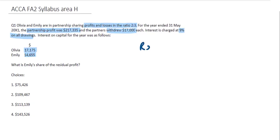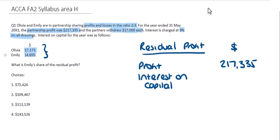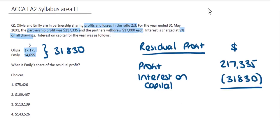To work out Emily's share, we first need to calculate the residual profit. The partnership profit was $217,335. We then make adjustments based on information relating to the partners. There are no salaries mentioned, but interest on capital is an expense to the business owed back to the partners, so we deduct it. The two interest on capital figures — $17,175 plus $14,655 — give us $31,830, leaving a subtotal of $185,505.